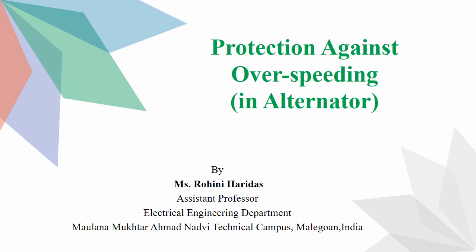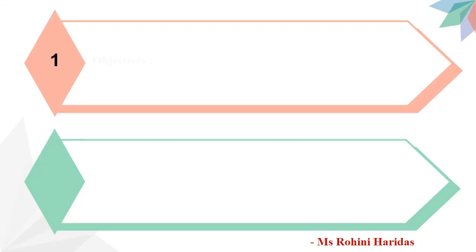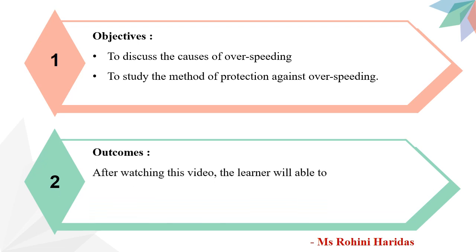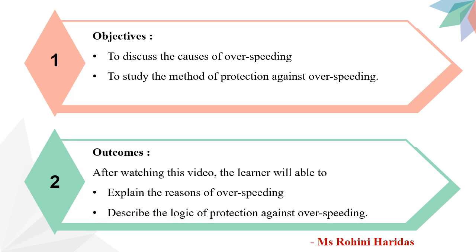Today in this video, we are going to discuss the protection against overspeeding in case of an alternator. The objectives are: to discuss the causes of overspeeding, and to study the method of protection against overspeeding. After watching this video, the learner will be able to explain the reasons for overspeeding and describe the logic of protection against overspeeding.